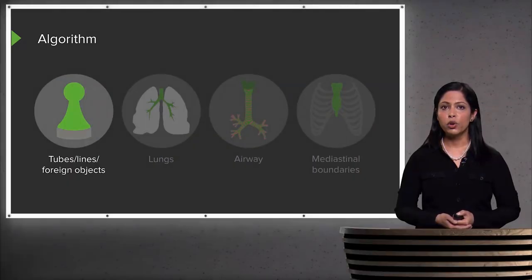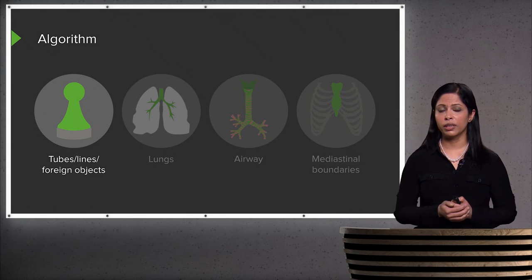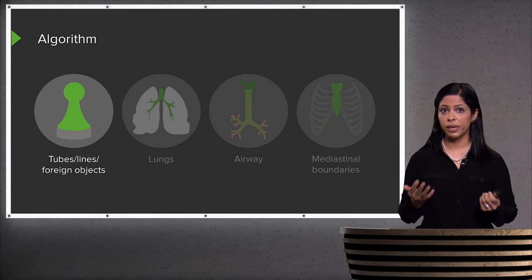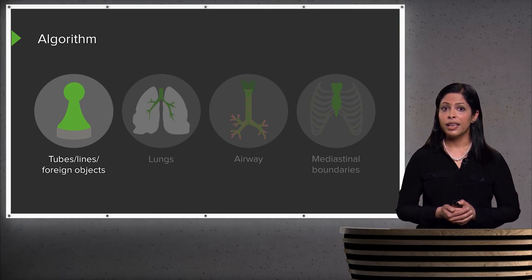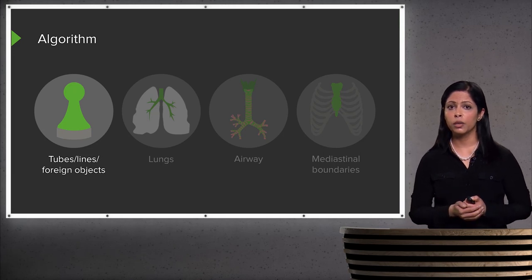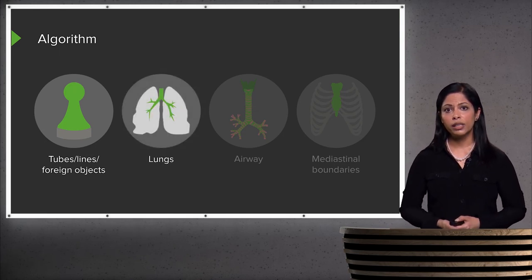It's important to develop a normal algorithm to look at a chest radiograph — this is important in all of radiology. For every imaging study, you want a systematic algorithm to ensure you look at every single structure on the film. The algorithm I use starts with any abnormal tubes, lines, and foreign objects, since patients in the hospital may have multiple lines and tubes that need to be confirmed in satisfactory position. I then look at the lungs.